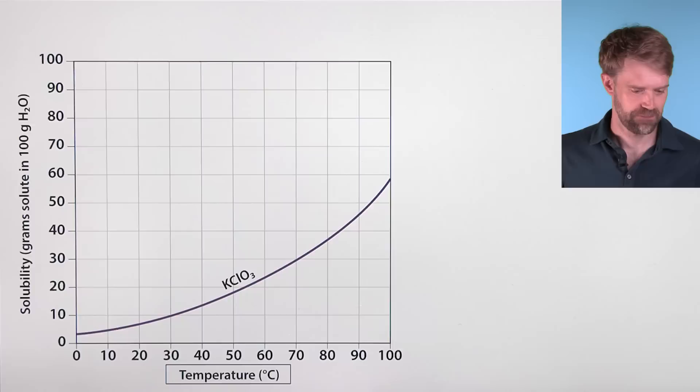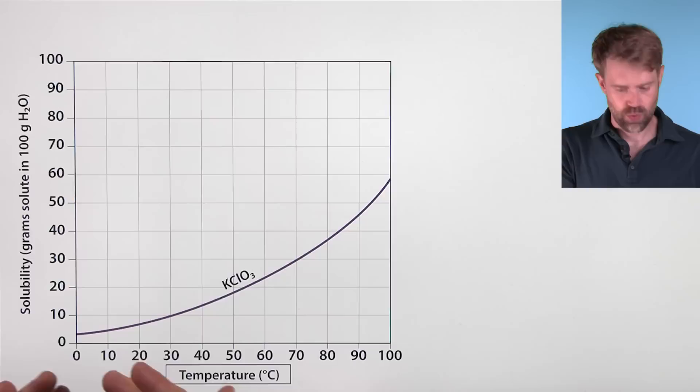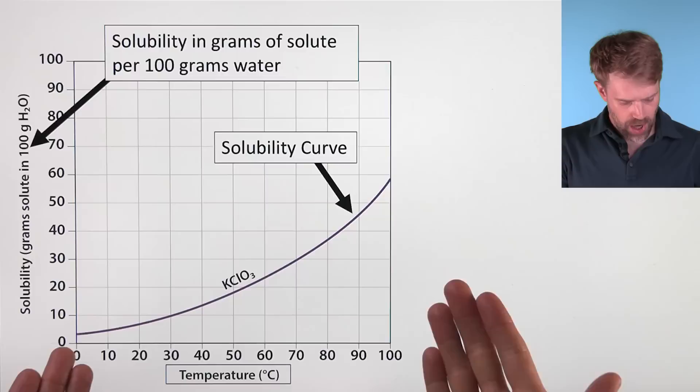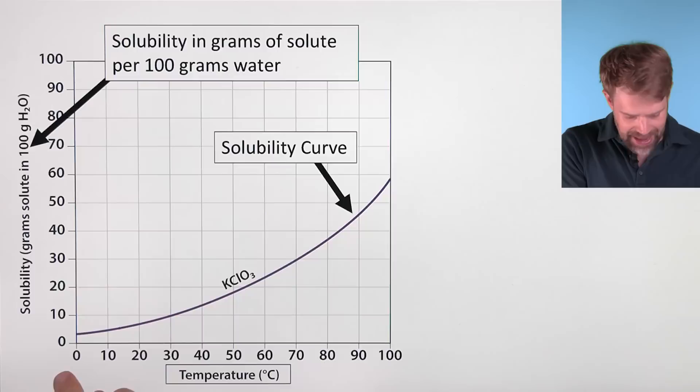Here on the x-axis we have temperature in degrees Celsius, and on the y-axis is solubility in grams of solute per 100 grams of water. This line shows us the solubility of KClO3 at different temperatures. We call this line the solubility curve, and this type of graph is useful in a bunch of ways.